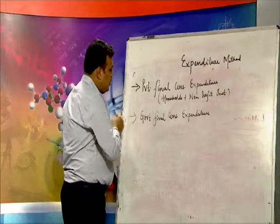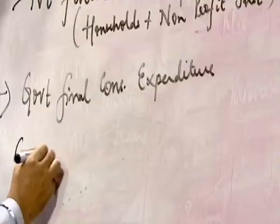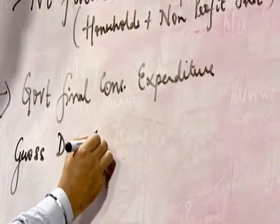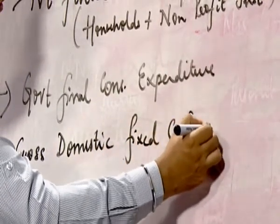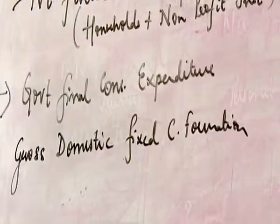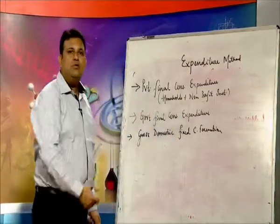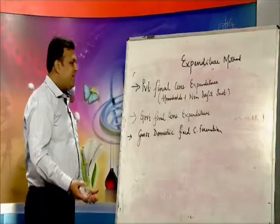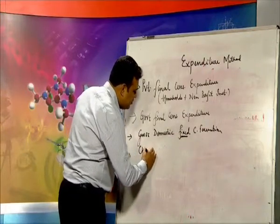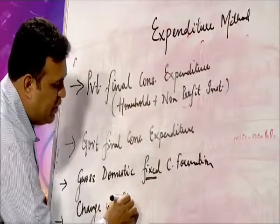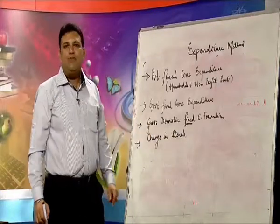Then we have gross domestic fixed capital formation. It means we are investing in fixed assets — building, plant, machinery, equipment, residential construction, purchase of plot, land, and anything fixed. If it is fixed, you also have to take change in stock, that is your inventory. Stocking any inventory is also part of capital formation.